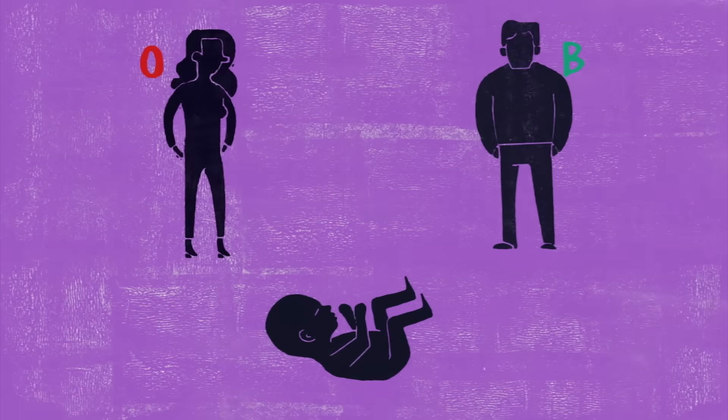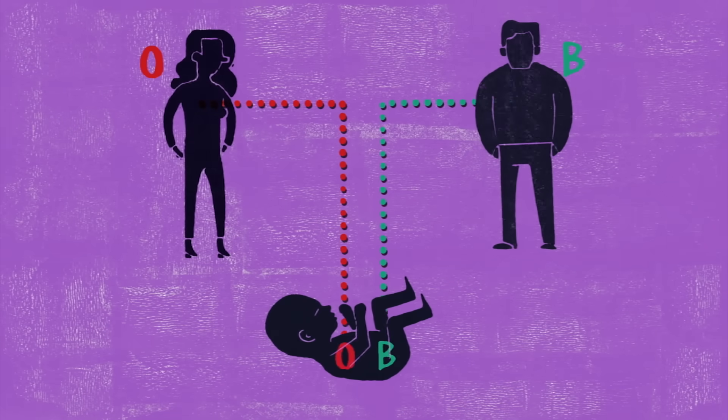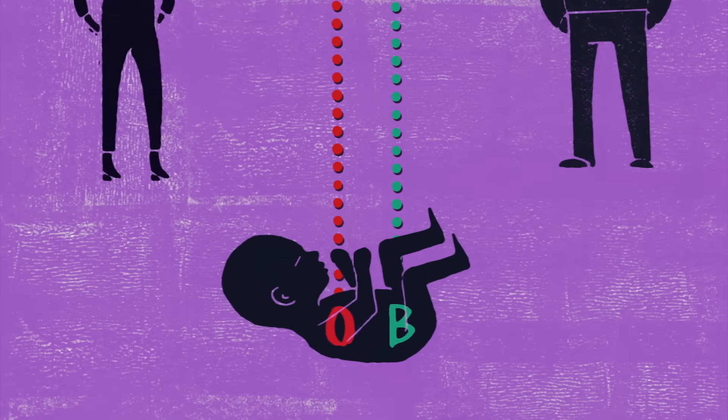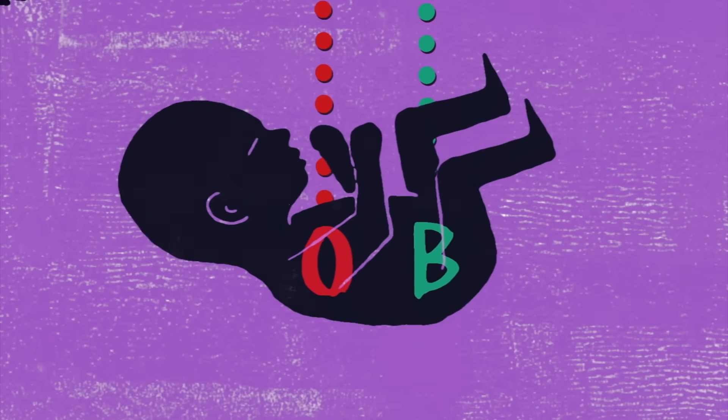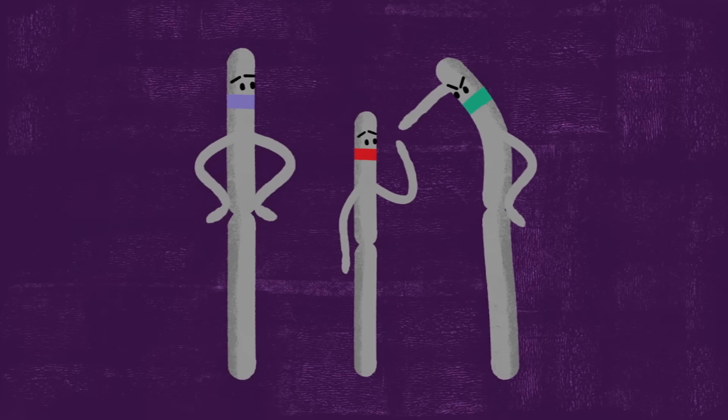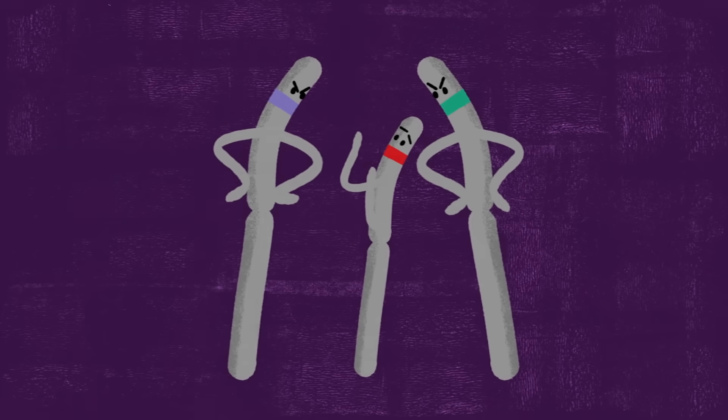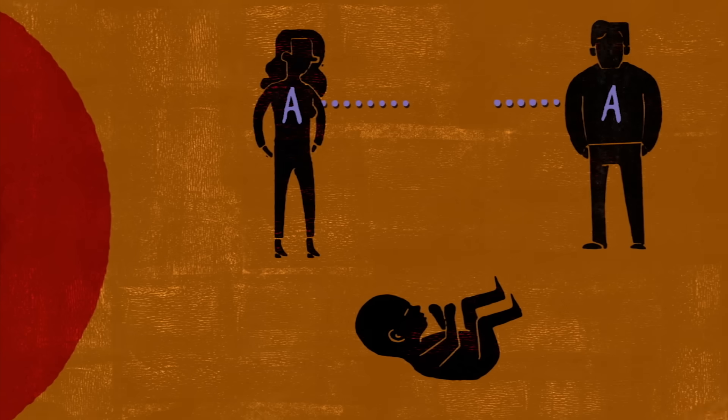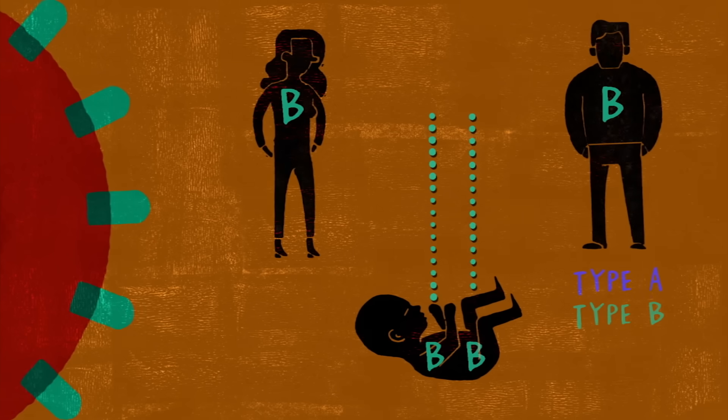And because we inherit one copy of each gene from each parent, every individual has two alleles determining blood type. When these happen to be different, one overrides the other depending on their relative dominance. For blood types, the A and B alleles are both dominant, while O is recessive. So A and A gives you type A blood, while B and B gives you type B.